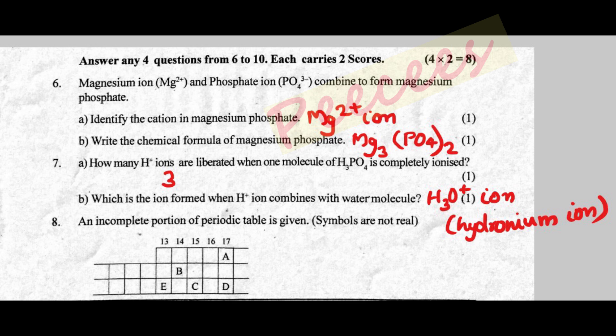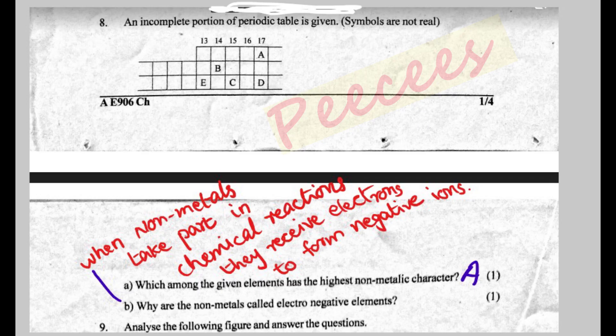At the second question, an incomplete portion of the periodic table is given — symbols are not real. Which among the given elements has the highest non-metallic character? The right side of the periodic table has higher non-metallic character.